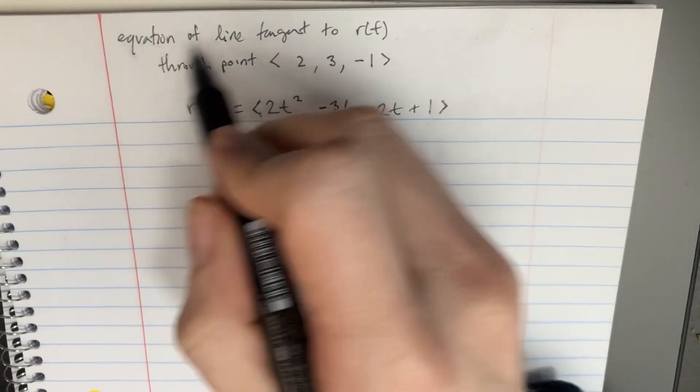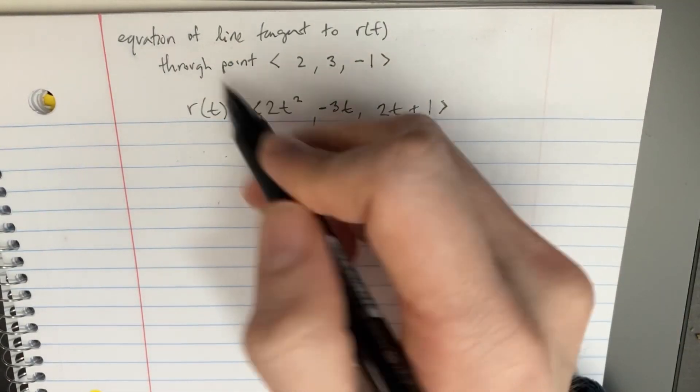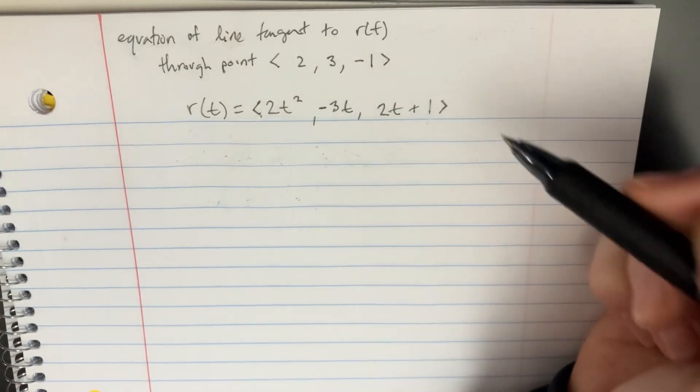This is a cool problem because we're asked to find the equation of a line tangent to r(t) that goes through the point 2, 3, and negative 1.